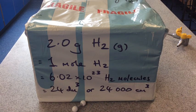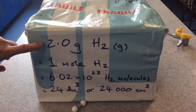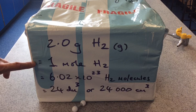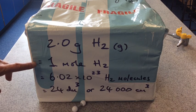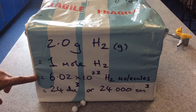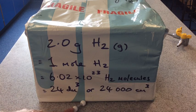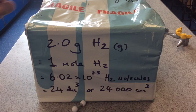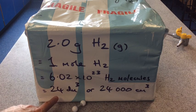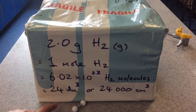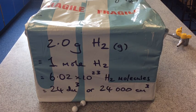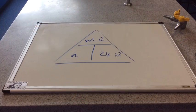So let's just go through the information on the box then. If you've got 2 grams of hydrogen gas, that would be a mole of hydrogen. So that would be 6.02 times 10 to the 23 hydrogen molecules, these things here, and they would occupy this volume, which can either be expressed as 24 decimeters cubed or 24,000 centimeters cubed.